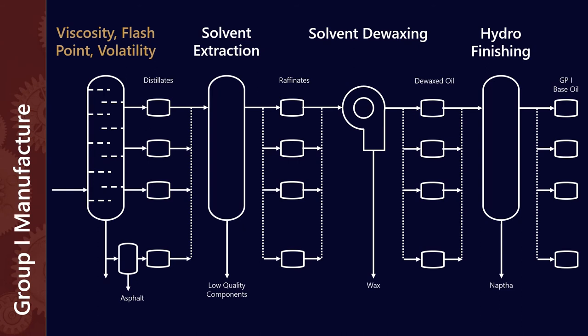Now solvent extraction because it's removing aromatics is going to give us our VI and our oxidation stability. Solvent de-waxing because it's removing waxes is going to really help our cold temperature performance. So that's pour point and the cold crank. And lastly you've got hydro finishing. And hydro finishing is going to help us with color stability and to be honest a little bit on the oxidation stability but not much else.